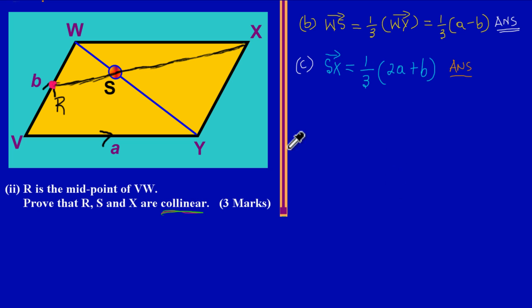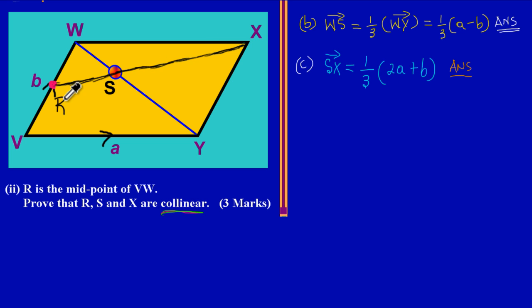In the previous lesson we found the distance from S to X. We have an expression that represents that distance: S to X was one-third of 2a plus b. Since we already have that distance, I simply need to find the distance R to S and then make some comparisons. To get from R to S, I would have to go to W and then from W to S.